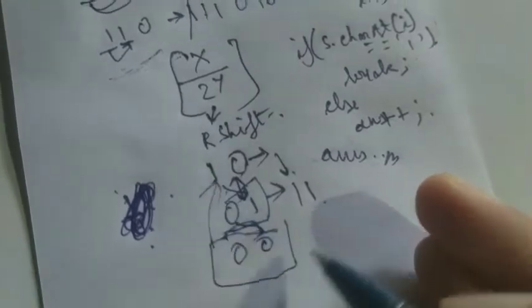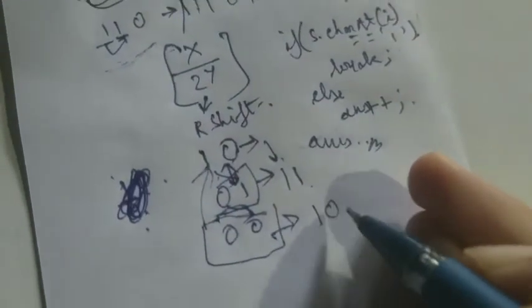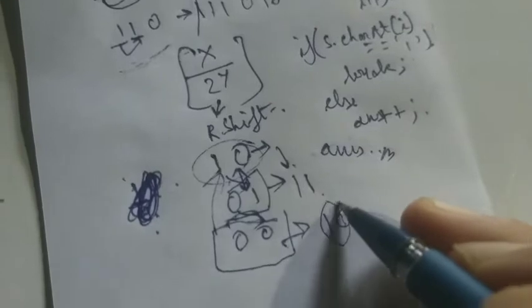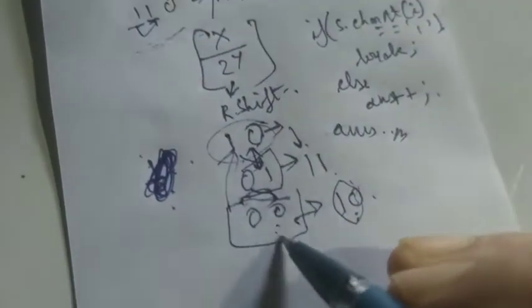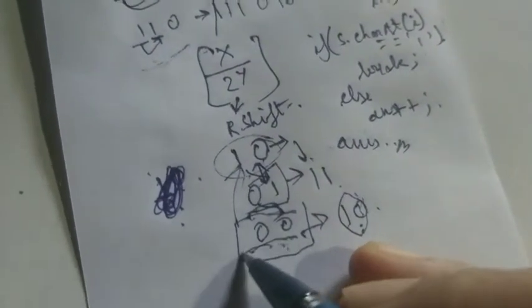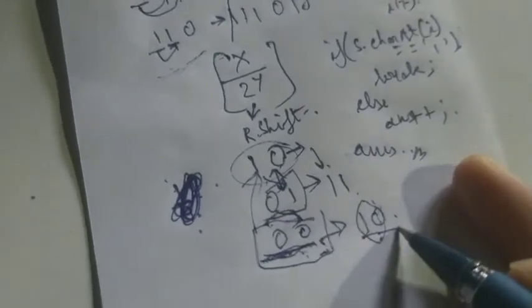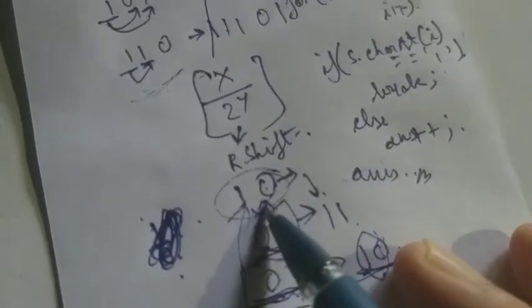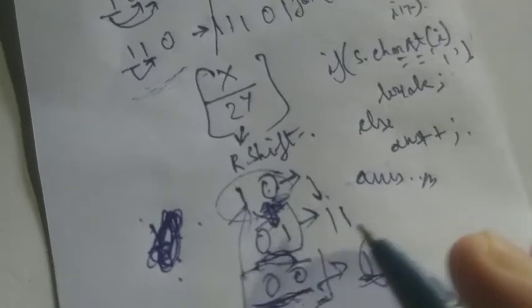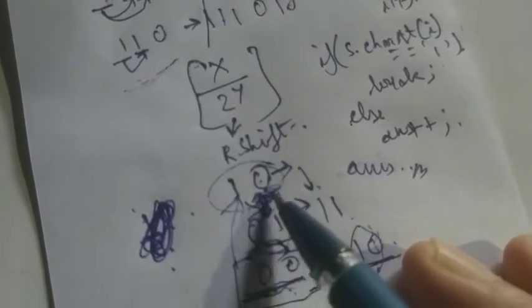The output becomes 1 0. That is this thing, and this is the minimum value that we can get after right shifting it. So the minimum number of right shifts we need is 2, and after that we will get the value which is the minimum. So the basic idea is: